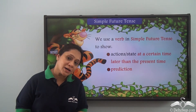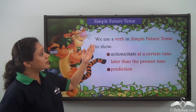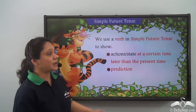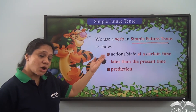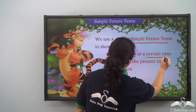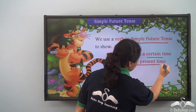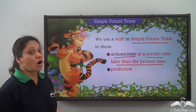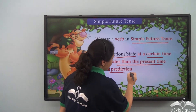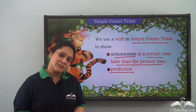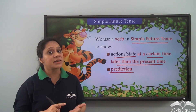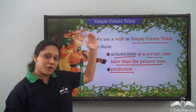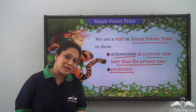So what have we learned today? We have learned that we use a verb in the simple future tense to show actions or state at a certain time later than the present time, which is the future, or for a prediction. Now you can identify sentences in the simple past tense, the simple present tense, as well as the simple future tense. We will learn more about tenses soon.